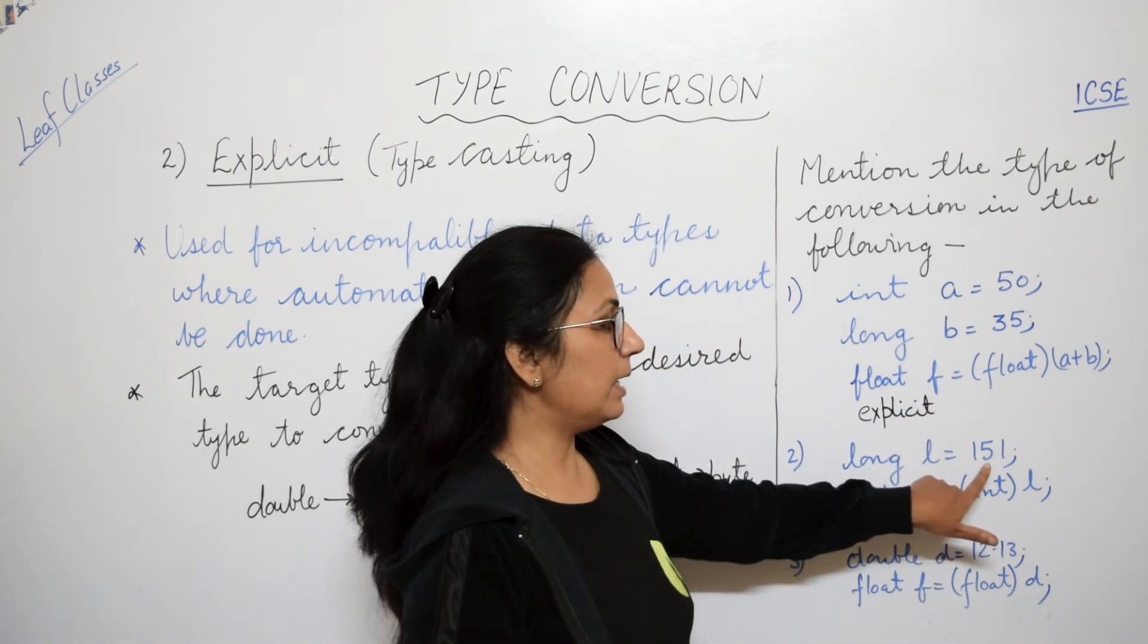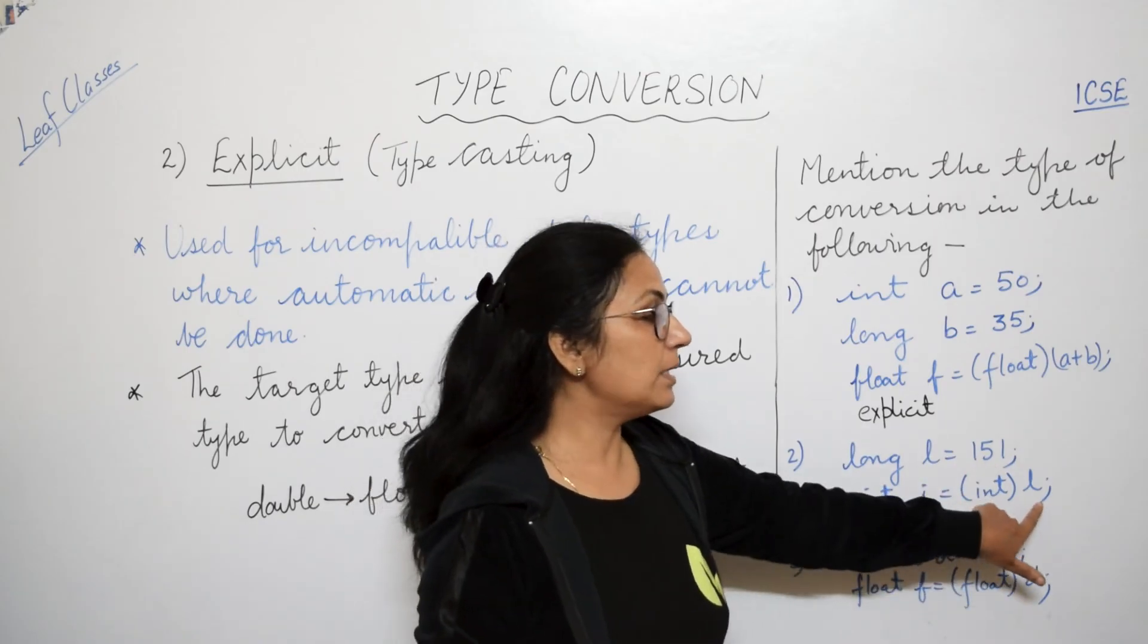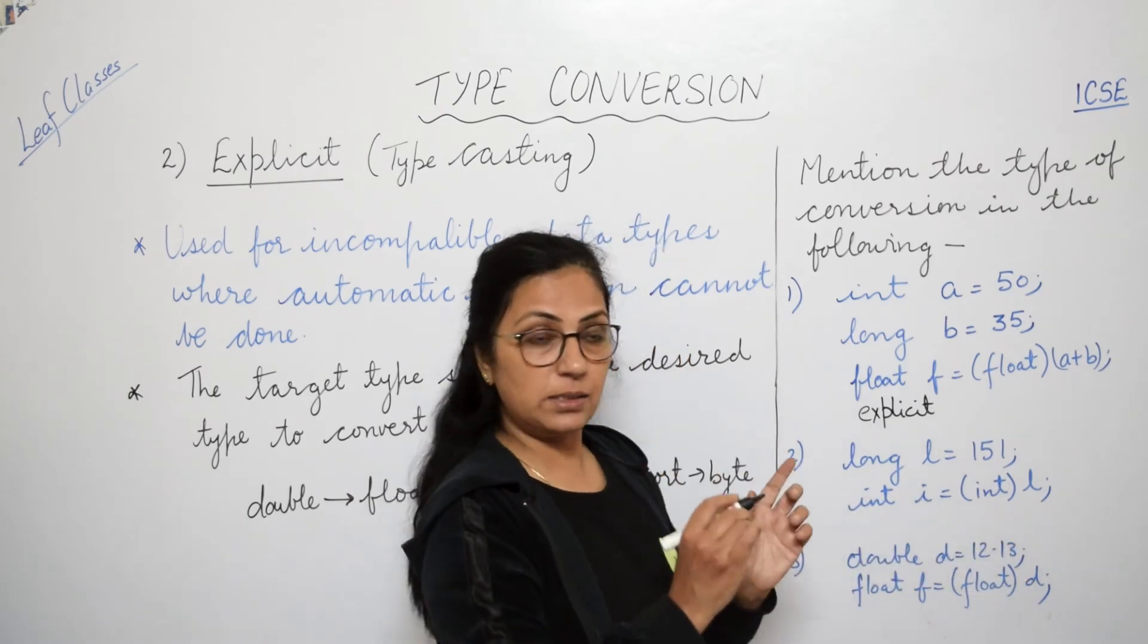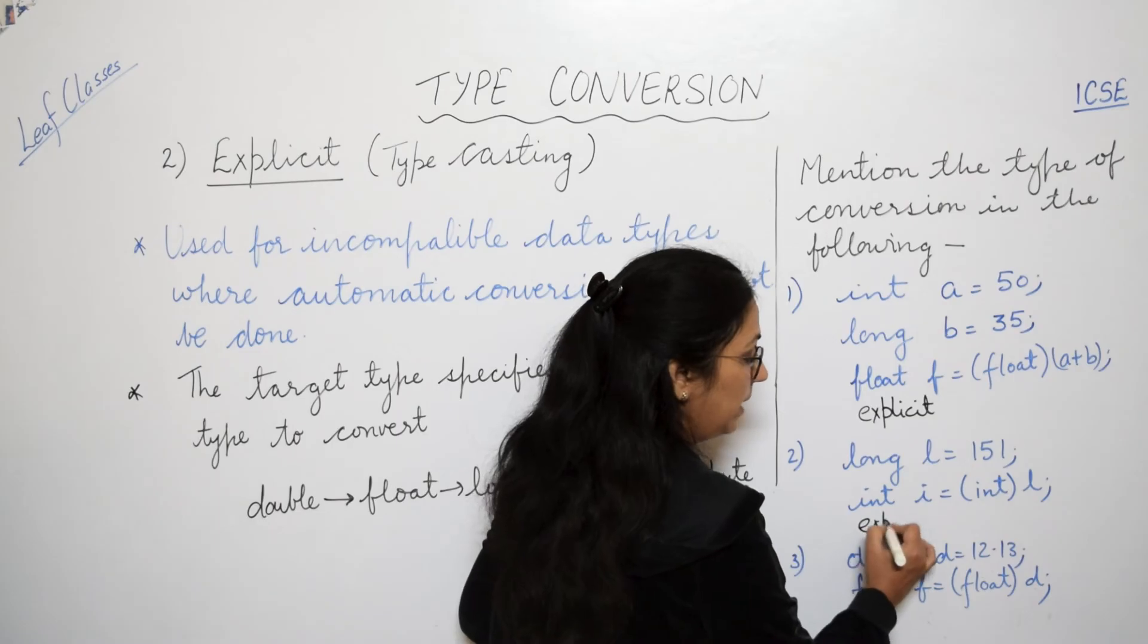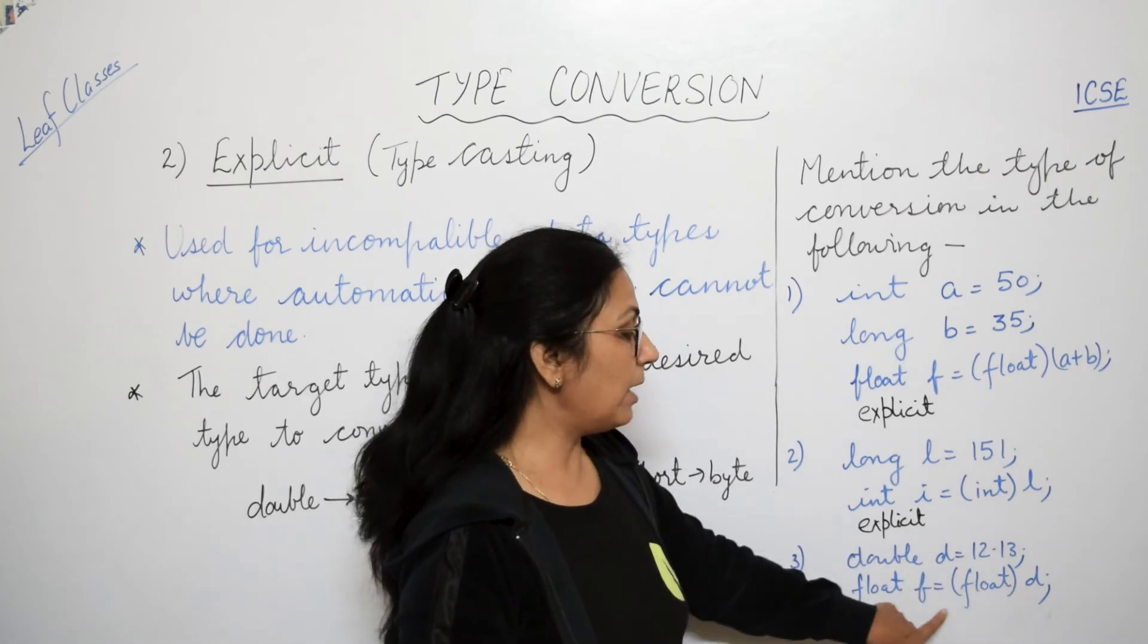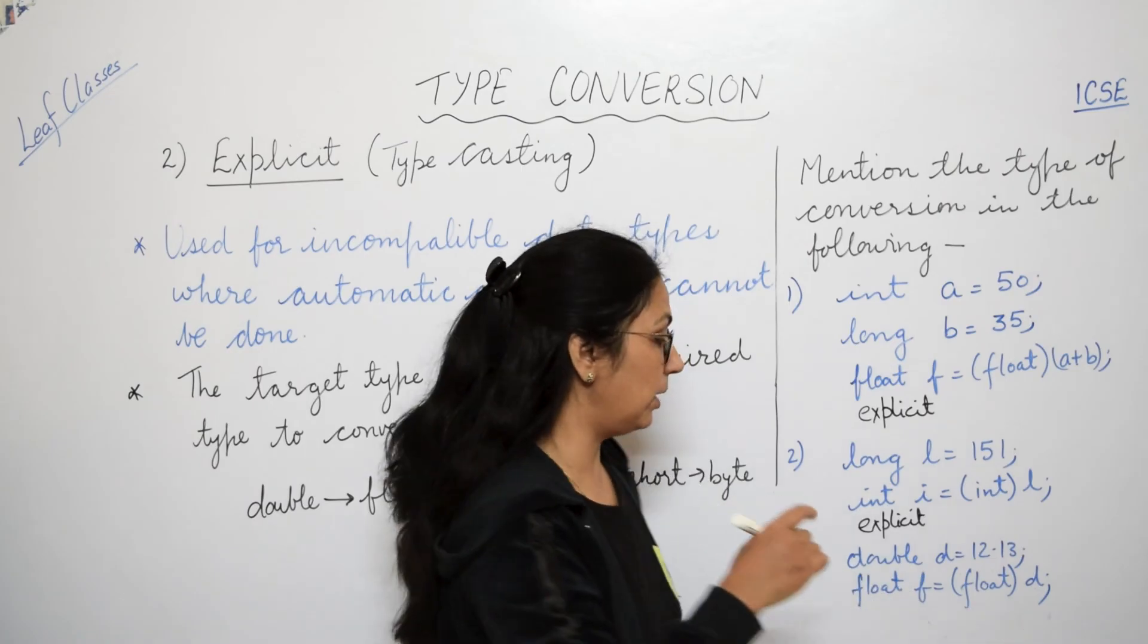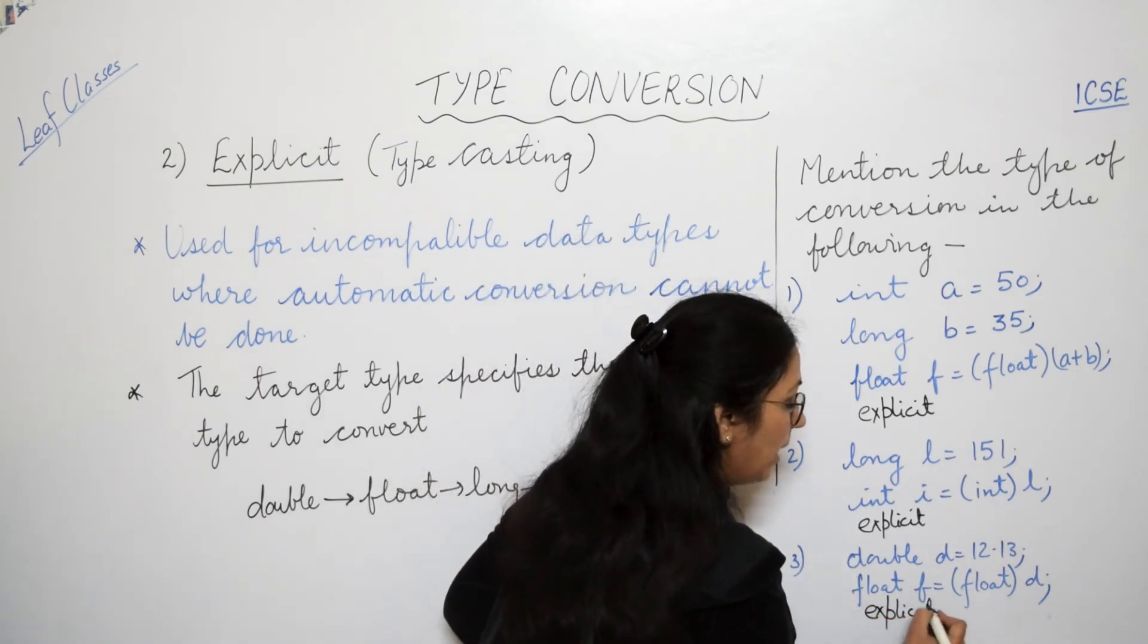Then second one, long l equals to 151, int i equals to int of l. L kya hai? Long type hai. Isko forcefully int mein convert kar rahe hain. So this will be again explicit. And see the next example. Double d equals to 12.13, float f equals to float of d. Double ko hum convert kar rahe hain float type mein. So here also explicit will be there.